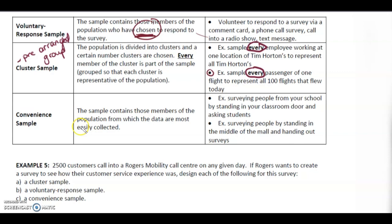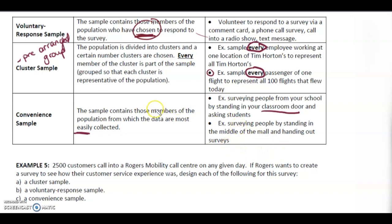Convenient sample: you take a sample from those members of the population from which the data are most easily collected — it's the most convenient. If you want to survey people from your school, you stand outside your classroom door, outside the cafeteria, or in the foyer. Another example is surveying people by standing in the middle of the mall and handing out surveys. It's convenient — there's lots of foot traffic, people are coming and going.